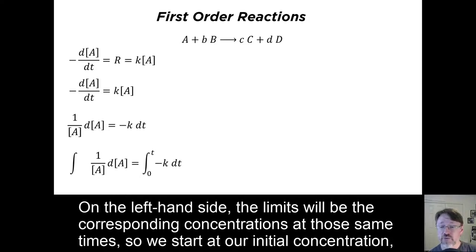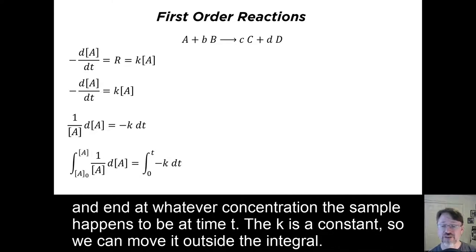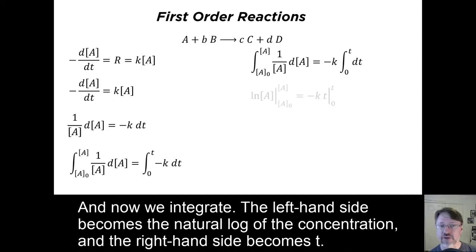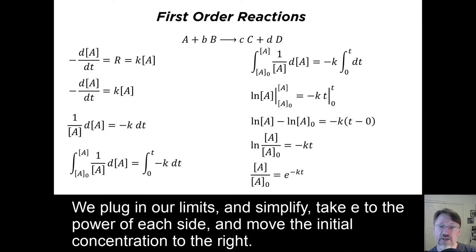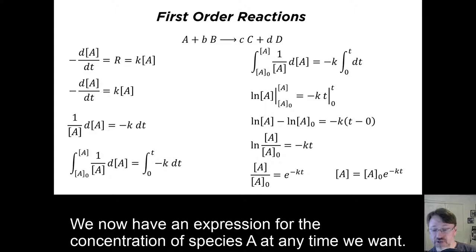On the left-hand side, the limits will be the corresponding concentrations at those same times. So, we start at our initial concentration, and we end at whatever concentration the sample happens to be at time T. The K is a constant, so we can move it outside the integral. Now, we integrate. The left-hand side becomes the natural log of the concentration, and the right-hand side becomes T. We plug in our limits and simplify. Take e to the power of each side, and move the initial concentration to the right. We now have an expression for the concentration of species A at any time we want.